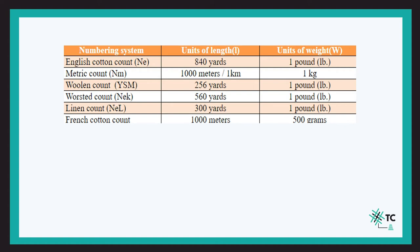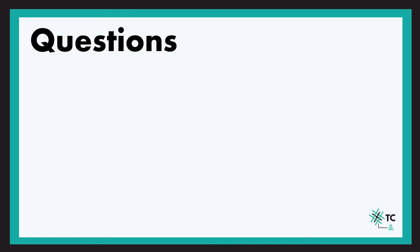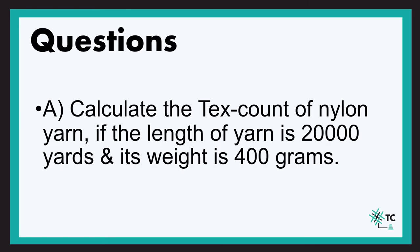Just like we had decitex and millitex in the direct count system, there are different numbering systems in indirect count as well. For English count Ne, the unit length is 840 yards per hank and the unit weight is one pound. For woolen count, the unit length is 256 yards per hank and the weight is one pound. For linen count, the unit length is 300 yards and the weight is one pound. A very important point: as the count in the indirect system increases, the yarn becomes finer, while if the count in the direct system increases, the yarn becomes coarser.